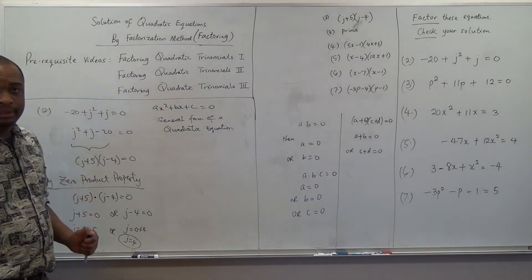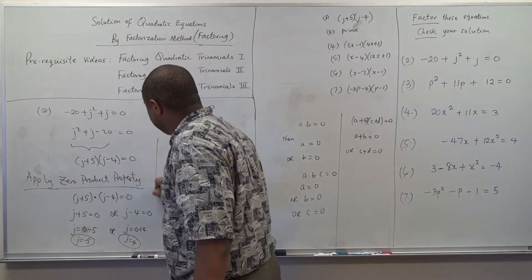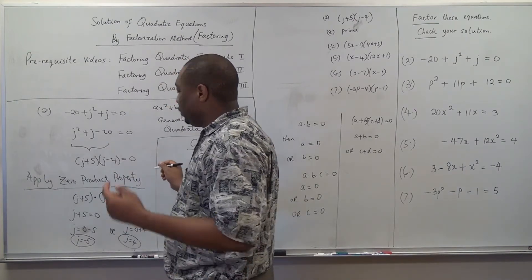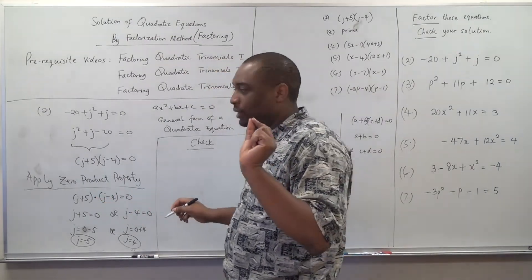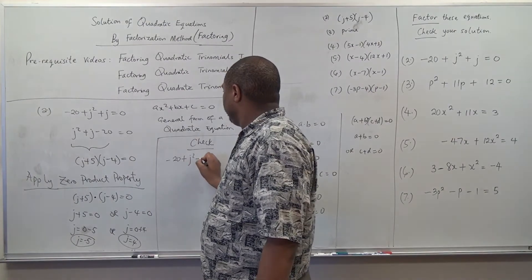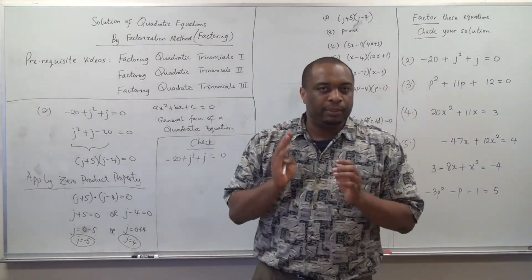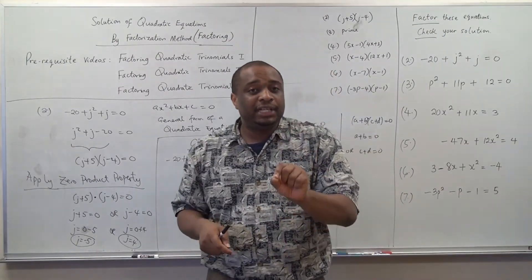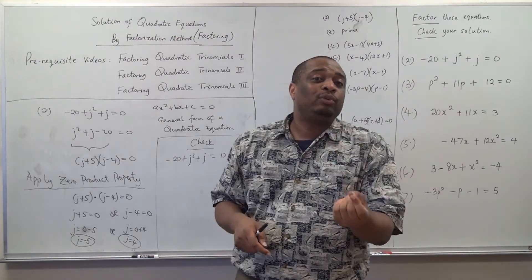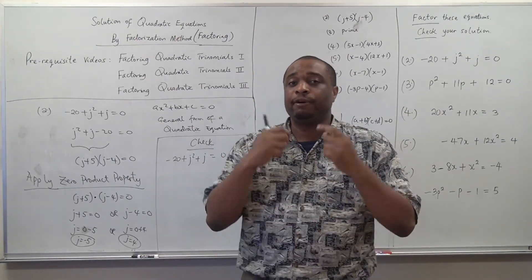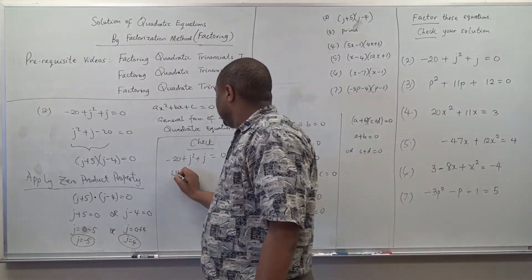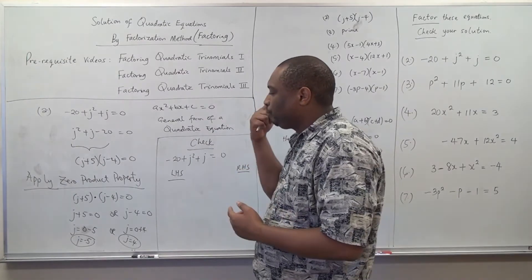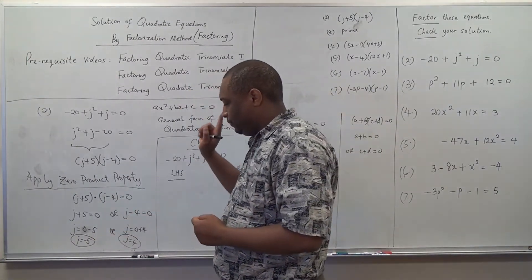It would be good to also view my videos on linear equations so that you know how we got negative five or four. The next thing for us to do is to check. We check from the main equation — always check from the main equation. Do not check from the modified equation, because if the modified equation is wrong, your check will still appear correct. So we write the main equation: negative 20 plus J squared plus J equals zero.